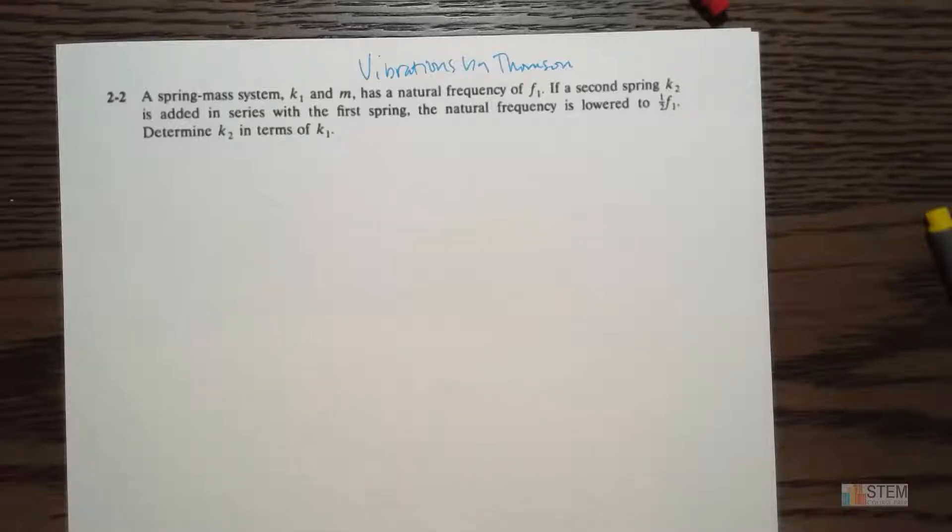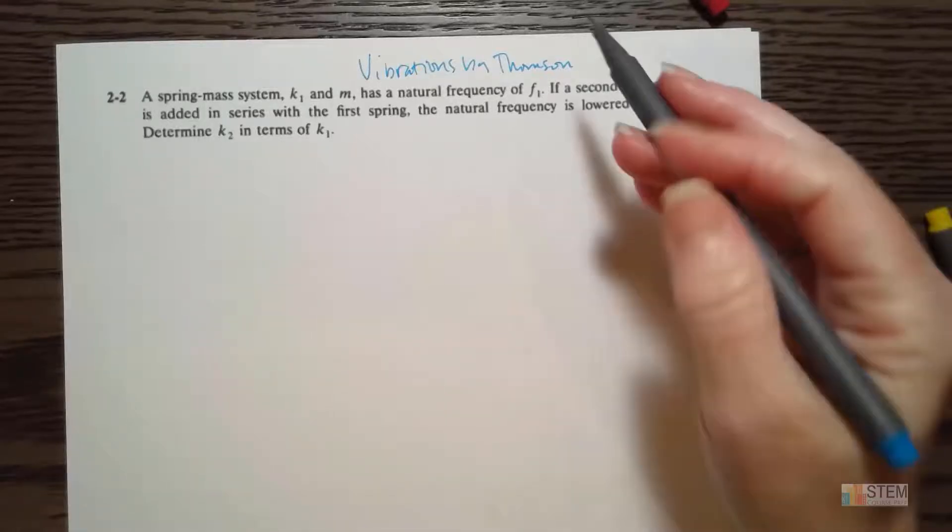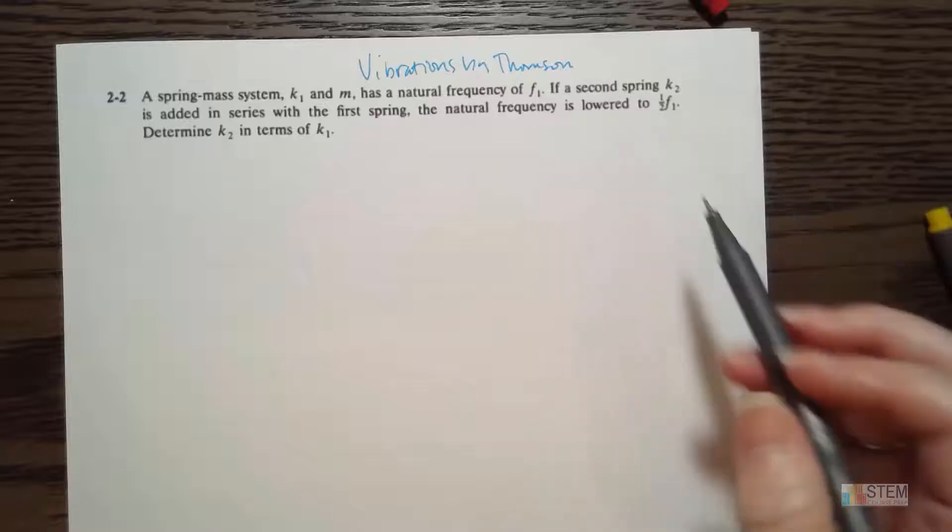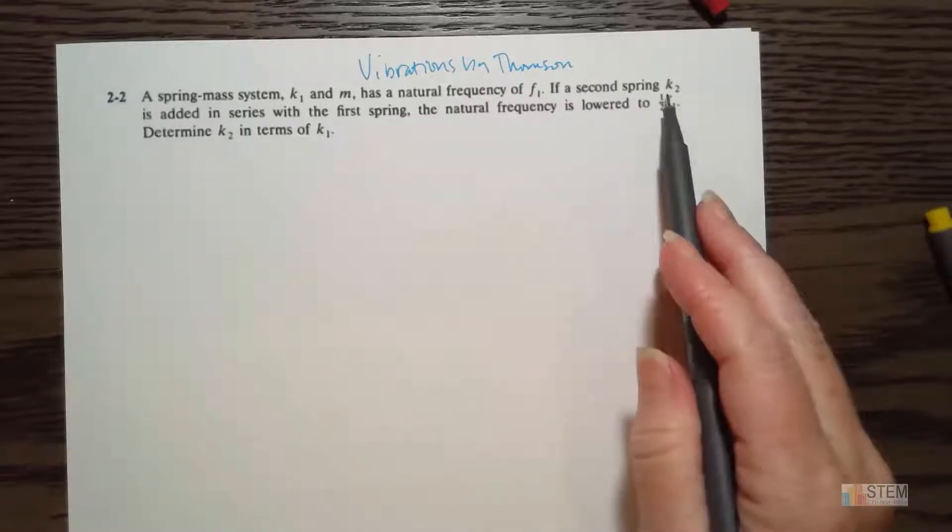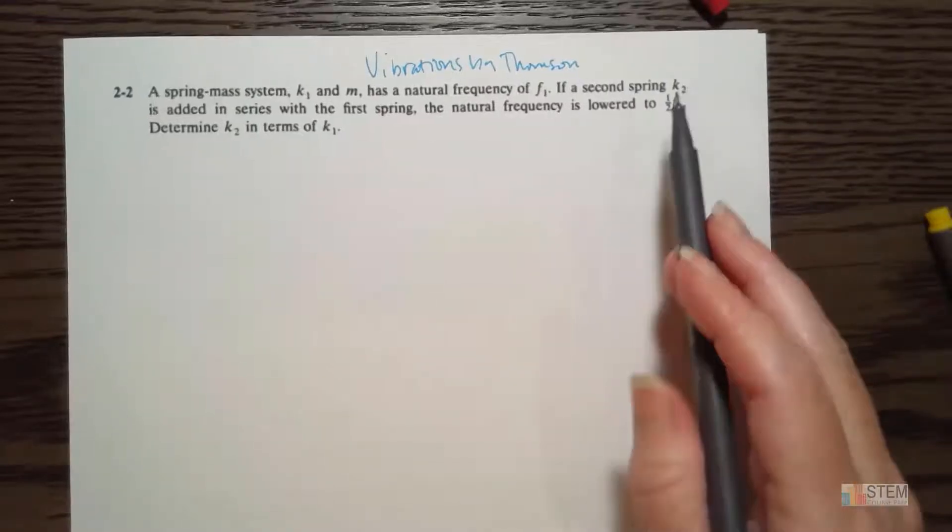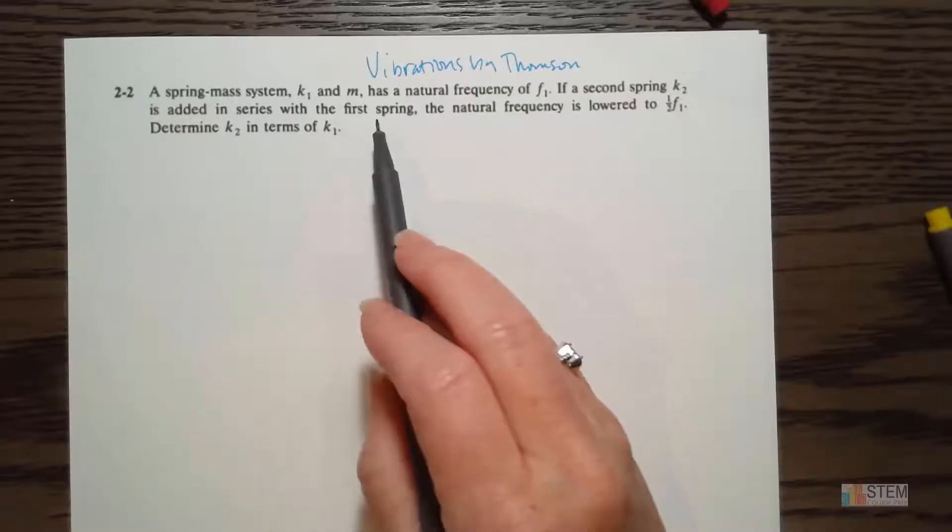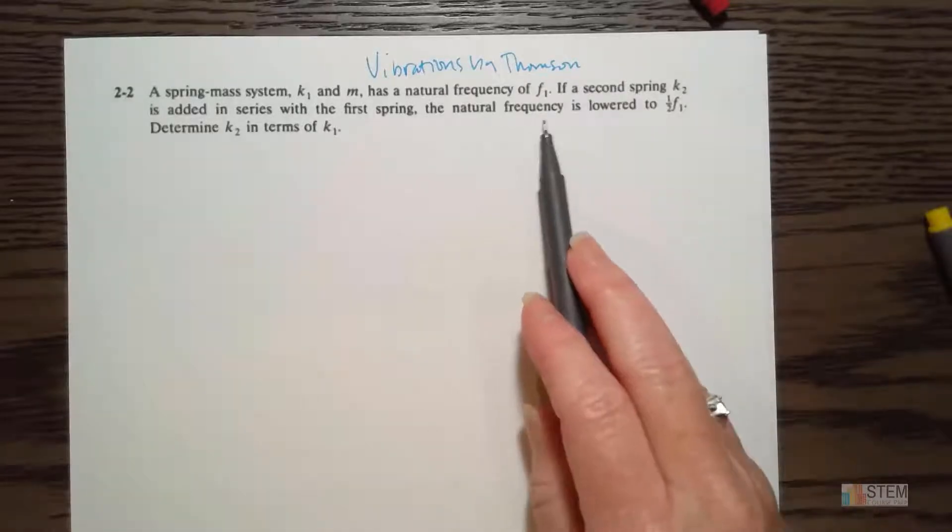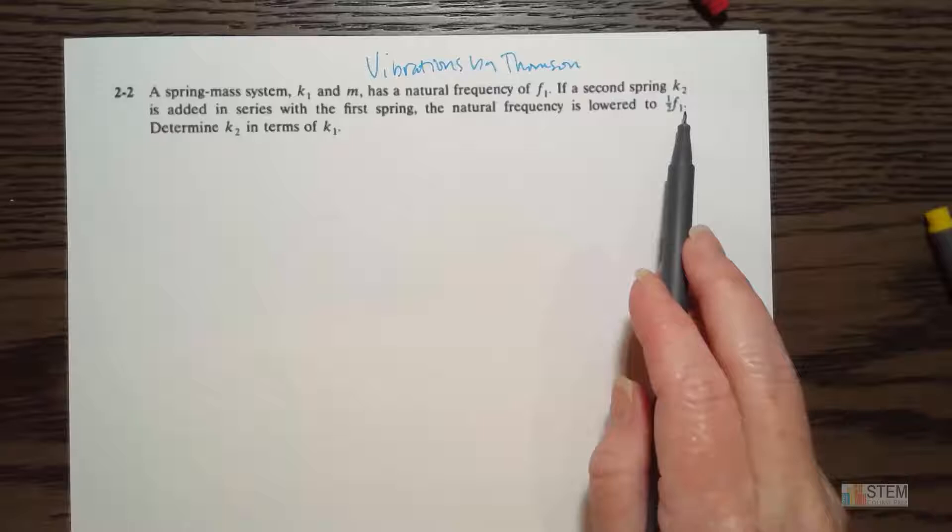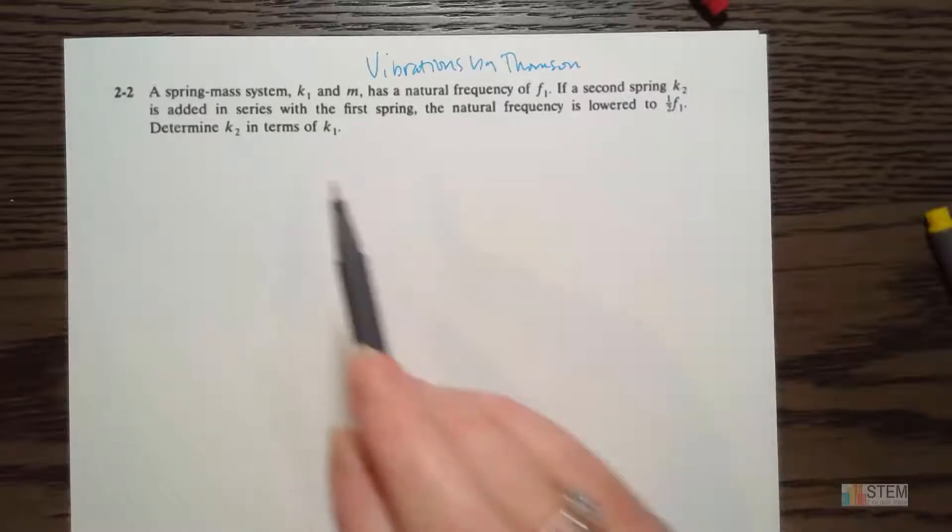This one says we've got a spring mass system, so it's got one spring, one mass. So k1 is the spring constant, m is the mass. It's got a natural frequency of f1. And then it says if a second spring with a constant k2 is added in series with the first spring, then the natural frequency is lowered to one-half f1. We want to find k2 in terms of k1.